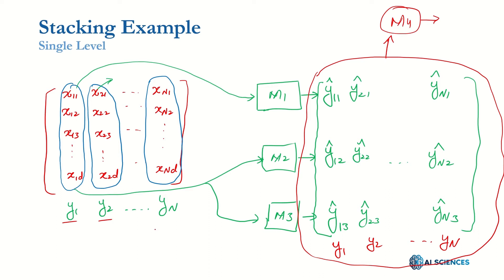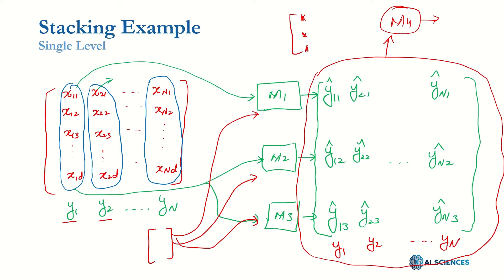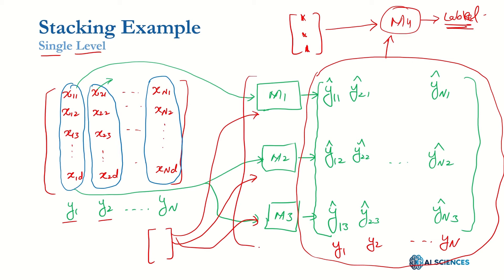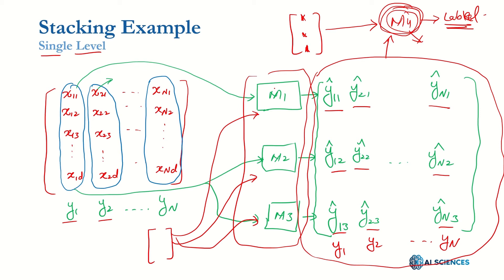So if we have a test data point, it goes to model one, model two, and model three — generating three predictions. These three predictions act as a feature vector, which goes to M4, and it generates the final label. That's what single-level stacking is: one layer of multiple models, and a second layer with one classifier trained on the predictions used as feature vectors. This M4 is completely independent from the first three, and is normally chosen to be logistic regression, though any model can be used.